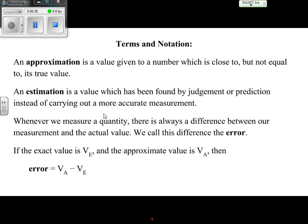Let's start with some vocabulary or terms and notation. Approximation is a word that we've probably heard in the real world. It's a value given to a number which is close to but not equal to its true value. I can think of a good example being pi. Pi is a number when written as a decimal that goes on and on. So we will often approximate that to say it's 3.14, but that's not its exact value. That's an approximation.